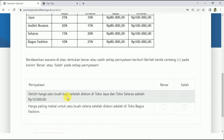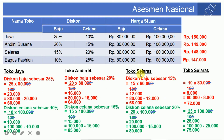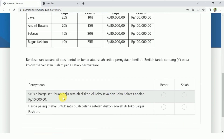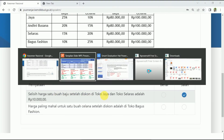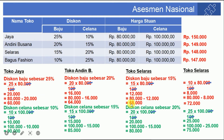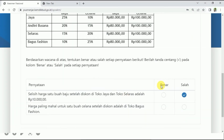Yang ditanyakan adalah selisih harga 1 buah baju setelah diskon di toko Jaya dan toko Selaras. Toko Jaya harga bajunya setelah diskon 60 ribu, toko Selaras bajunya 68 ribu. Berarti bedanya 8 ribu, bukan 10 ribu. Pernyataan pertama salah.